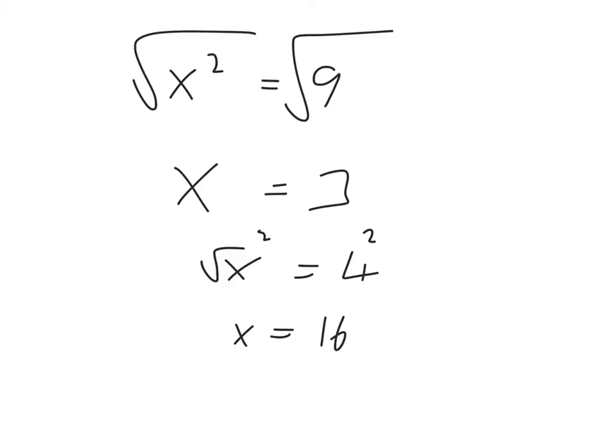So I guess the basic law that we can take away from these two examples is that if we want to get rid of a square, we can square root both sides of an equation. If we want to get rid of a square root, we can square both sides of an equation.